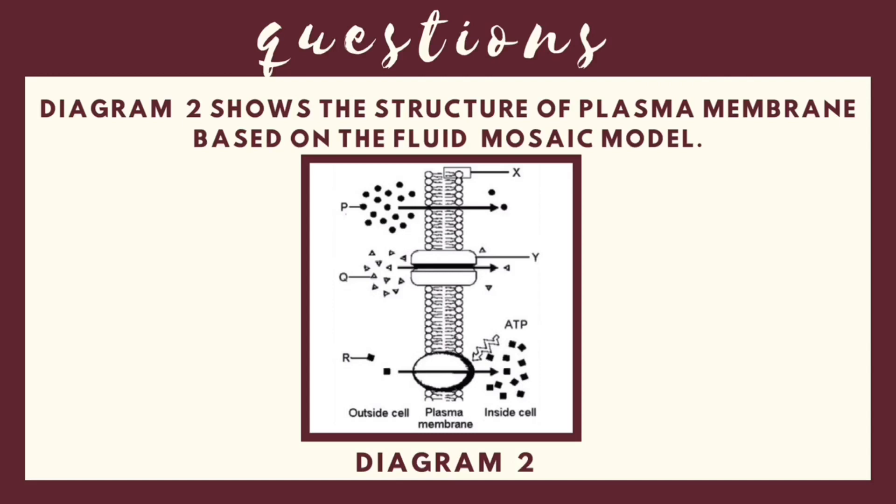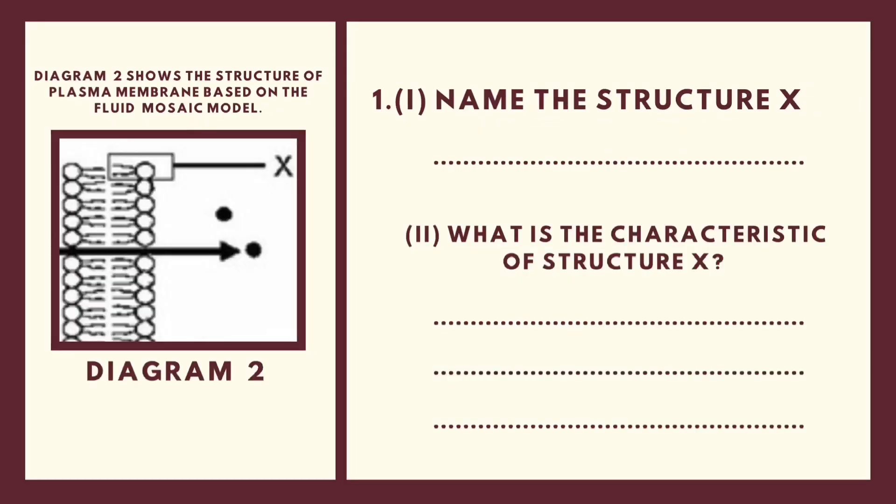So now, let's look on the first question. Name the structure X. Based on diagram 2, let's look on the structure X. As we know, the structure X is phospholipid. But why we didn't answer this question with phospholipid bilayer? Because, look at the structure that is shown, it only refers to the first layer but not the both layer. If the question is asked for the both layer, we need to answer phospholipid bilayer. But in this case, it only shows the first layer only. So, we need to answer the question with phospholipid only.